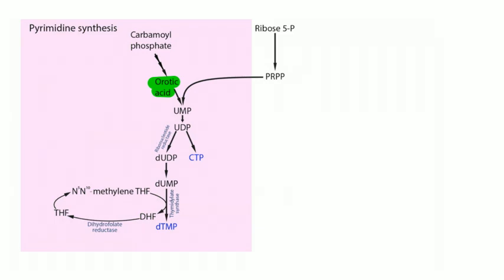After generating carbamoyl phosphate, several steps generate orotic acid — we'll highlight key enzymes. From orotic acid you generate UMP (uridine monophosphate), requiring PRPP (phosphoribosyl pyrophosphate), which provides the sugar and phosphate for both pyrimidine and purine nucleotides. Then adding a phosphate converts UMP to UDP, which can form either CTP (cytosine triphosphate) or deoxy-UDP via ribonucleotide reductase.